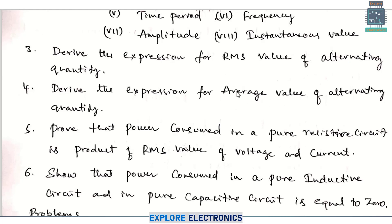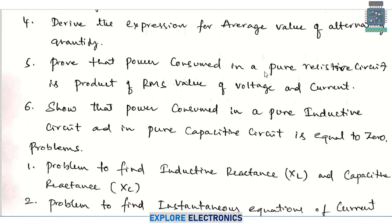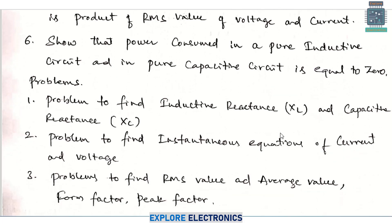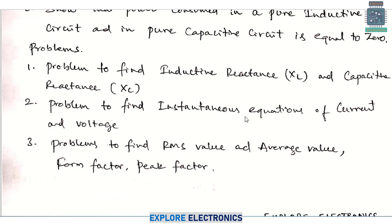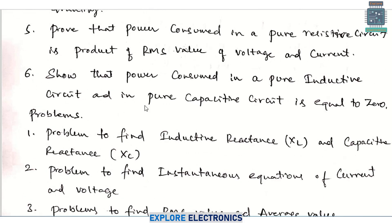You can expect one question on derivations — either deriving the expression for RMS value of the AC quantity or the average value of the alternating quantity. Also, prove that power consumed in a pure resistor circuit is as expected, and power consumed is equal to zero in pure inductive and pure capacitive circuits — this has been asked many times in previous examinations. Problems on inductive reactance and capacitance, problems to find RMS value, instantaneous equations of current and voltage, form factor, and peak factor are repeatedly asked. In this chapter, concentrate more on pure inductive and pure capacitive circuits.